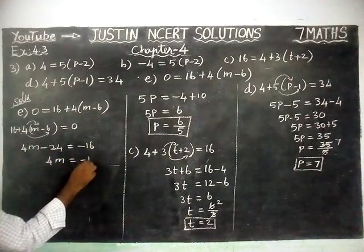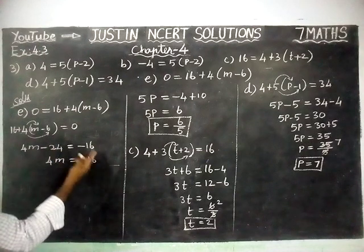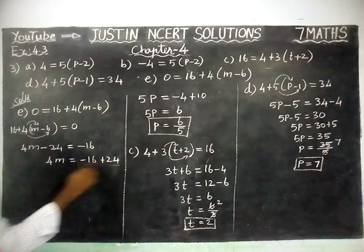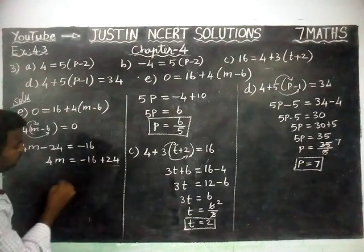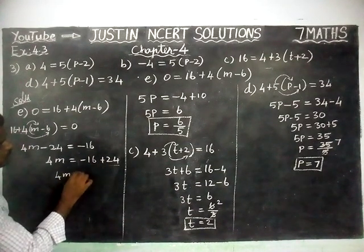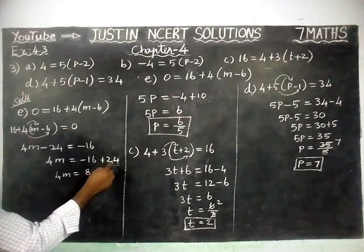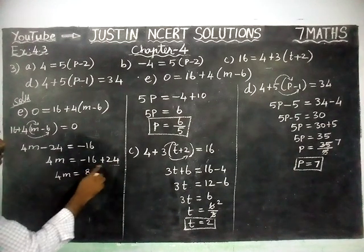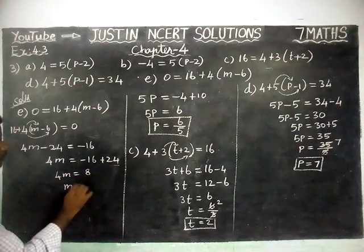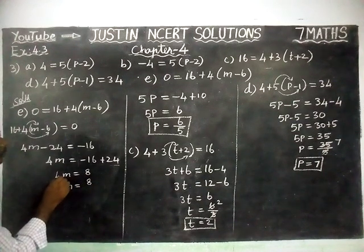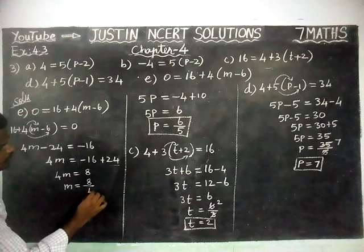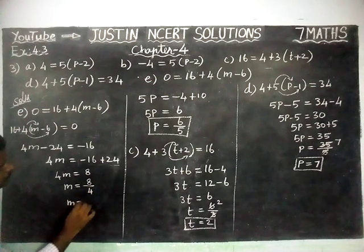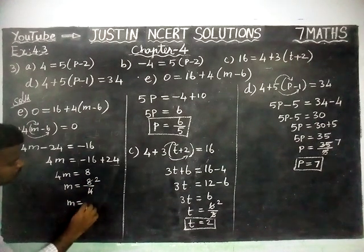4M is equal to minus 16. Minus 24 is going to the right hand side, so plus 24. Signs are different, we have to find the difference. Difference is 8. The greatest number is 24, so the plus answer will come. 4M is equal to 8. This multiplication 4 is coming to the right hand side as a division. 8 by 4. M is equal to 1 four is 4, 2 fours are 8, so value of M is equal to 2.